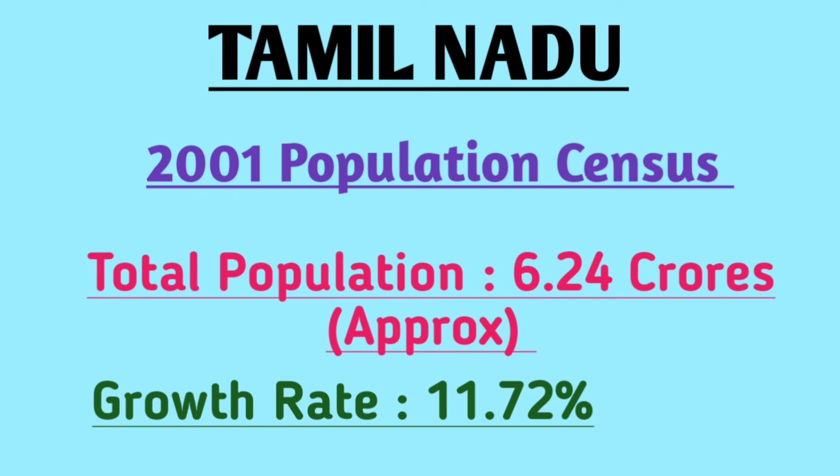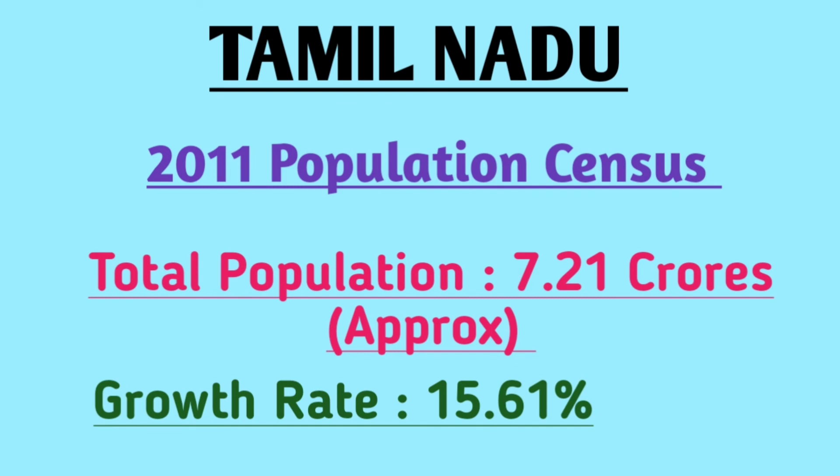In the 2001 population census, the total population of Tamil Nadu was 6.24 crores approximately, and the population growth rate was 11.72 percent. In the last official census held in 2011, the population of Tamil Nadu was 7.21 crores approximately, in which the growth rate was 15.61 percent from 2001 to 2011.